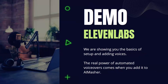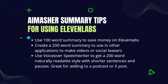The real power is the automated voiceovers when you add it to AI Mash. In AI Mash, we have a 100-word summary to save a little bit of money on 11 Labs — that's about a 30-second clip. We also have a 200-word summary for other applications like making videos — about a 60-second clip, good for YouTube Shorts. Then we have a special voiceover speechwriter: 200 words in a naturally readable style, like the way Paul Harvey used to read his speeches — short sentences, very punctuated, with a lot of pausing. Great for adding to a podcast.